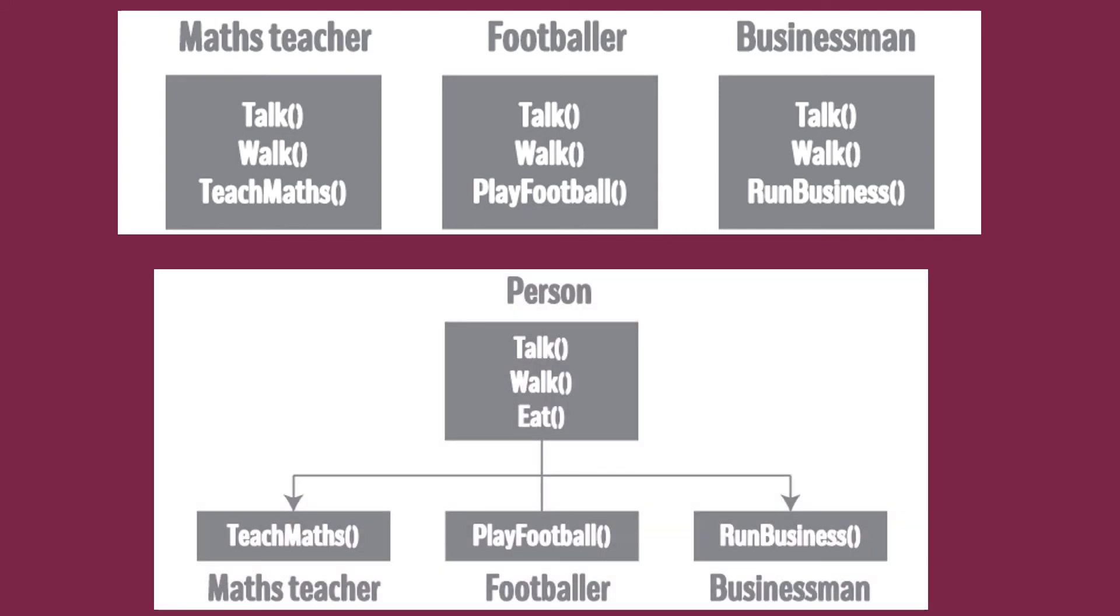Now, instead of making all three classes and adding functions again and again, we can have one common base class named as person. In which you can add the common properties like talk, walk and eat. Using inheritance, you don't have to implement the same code for talk, walk and eat each time for three different classes. That is maths teacher, footballer and businessman. They can directly inherit from the class person.